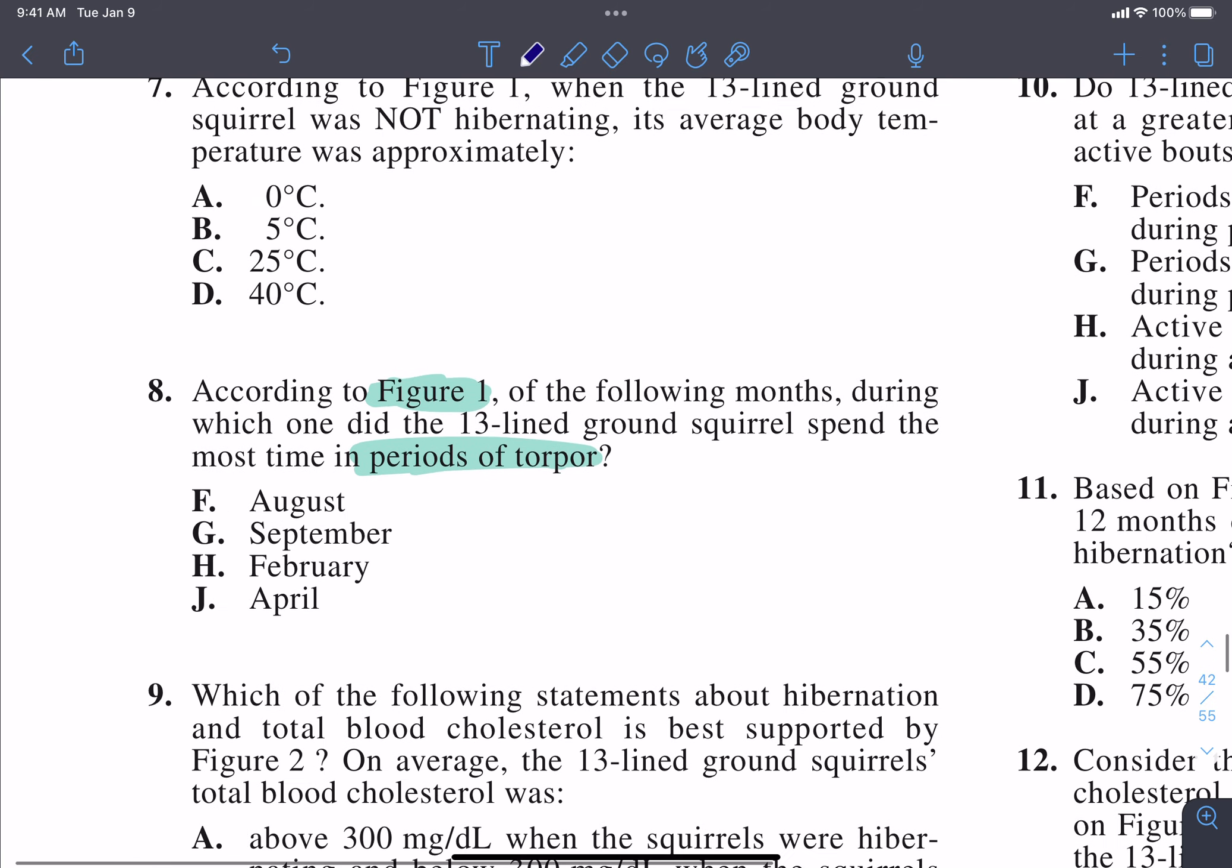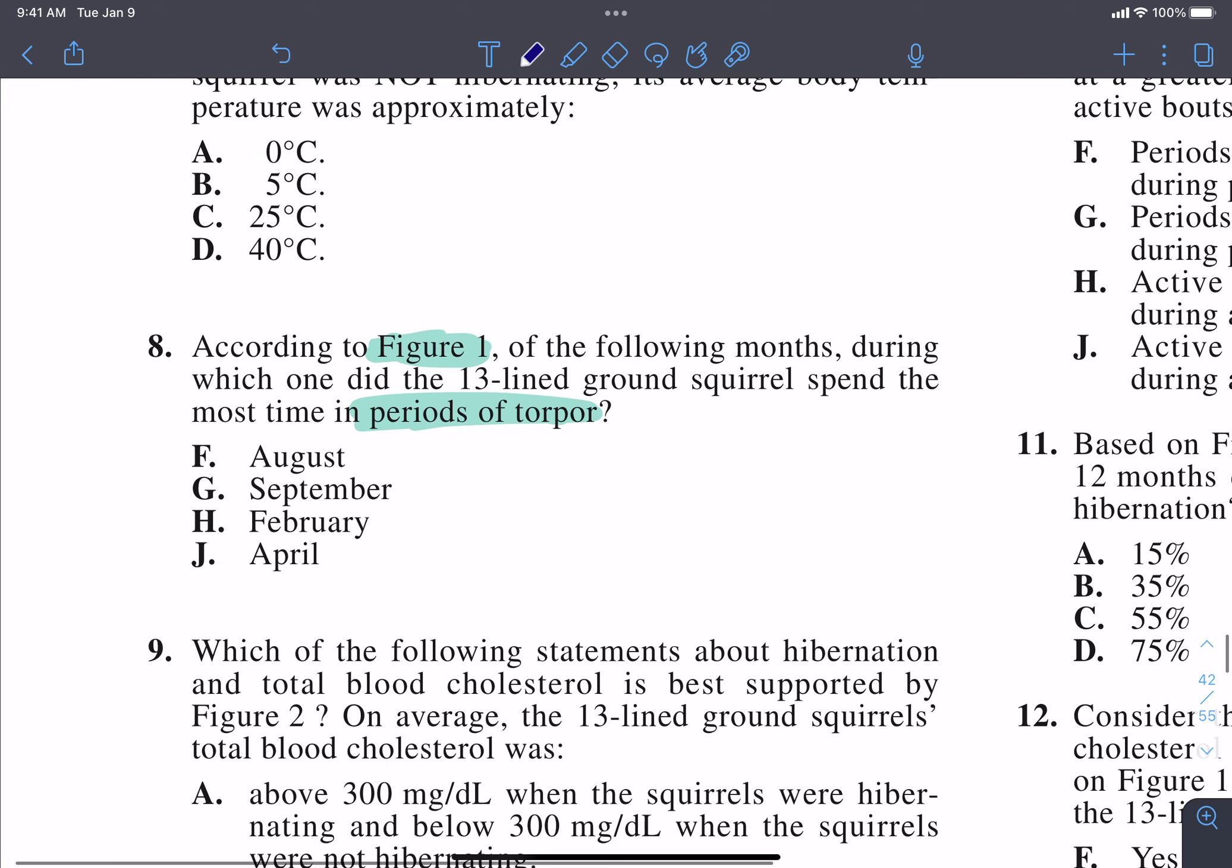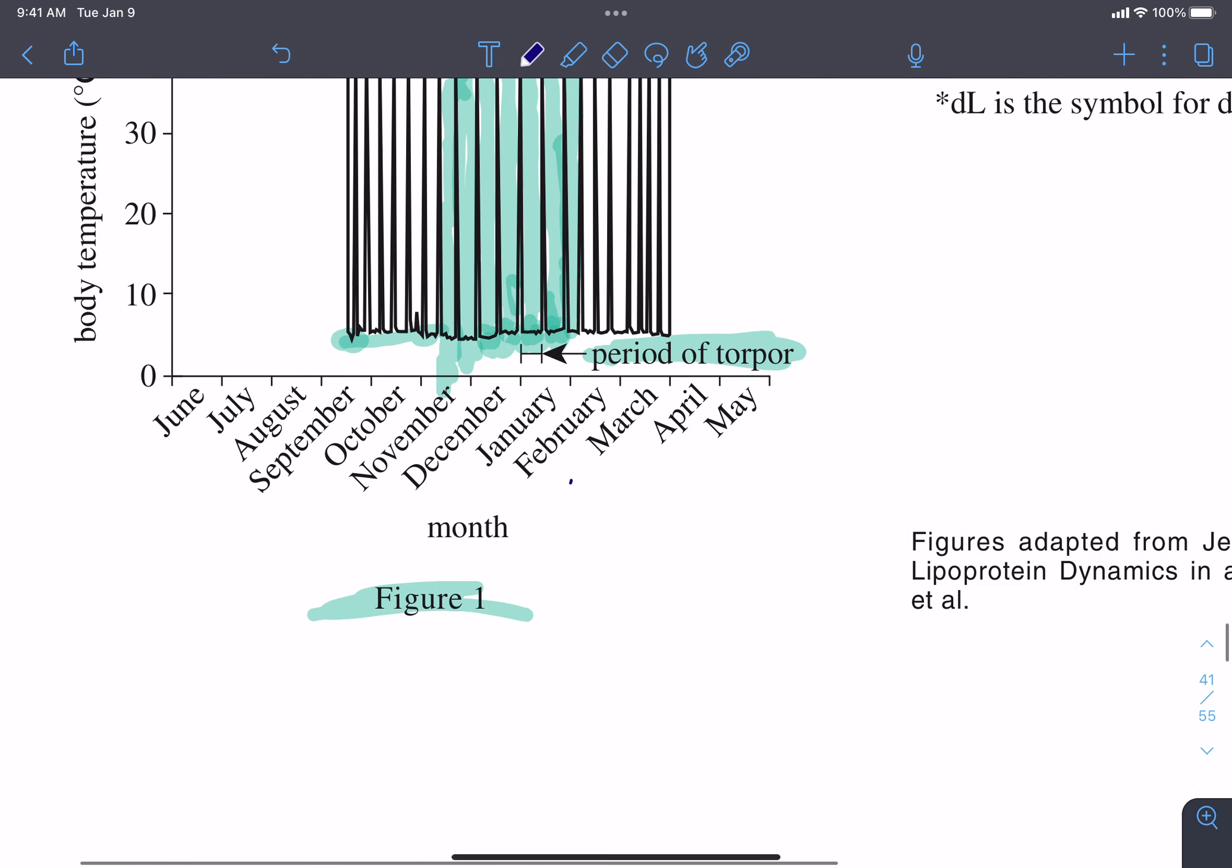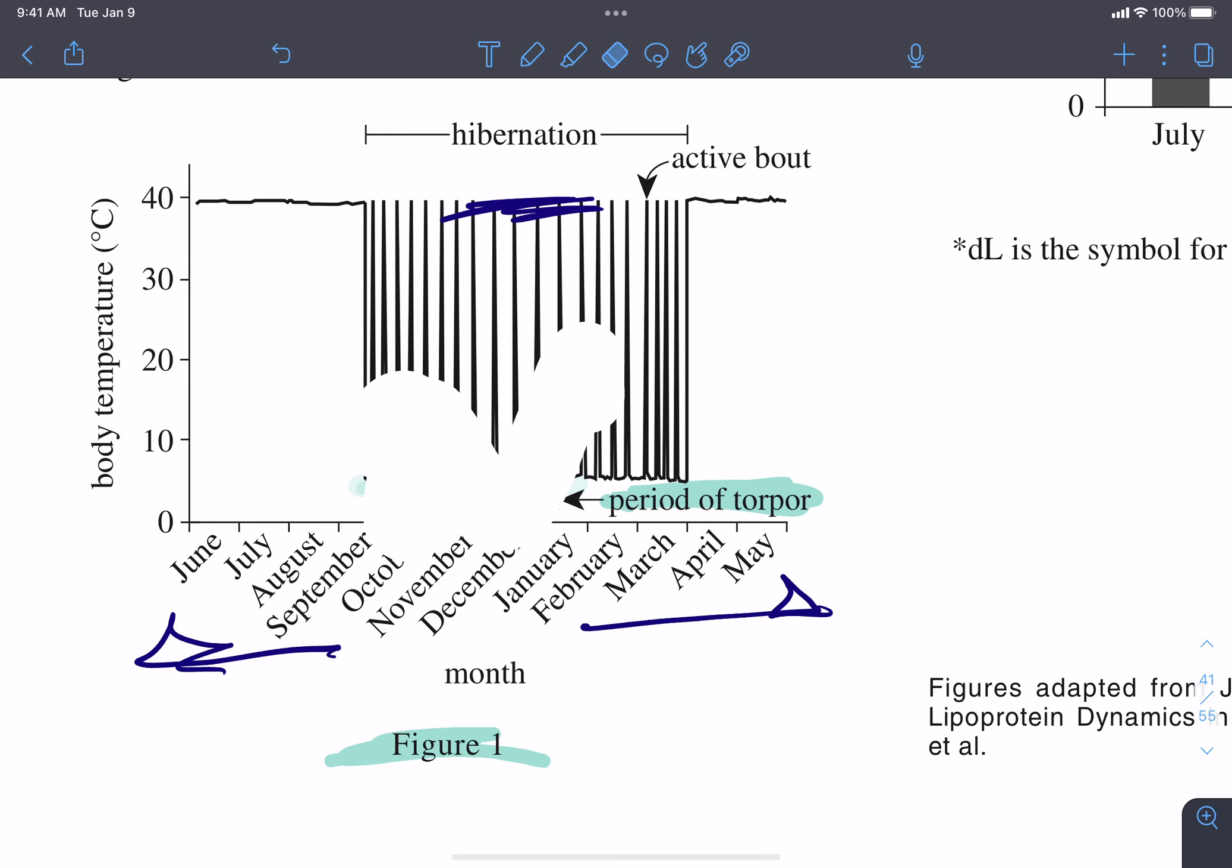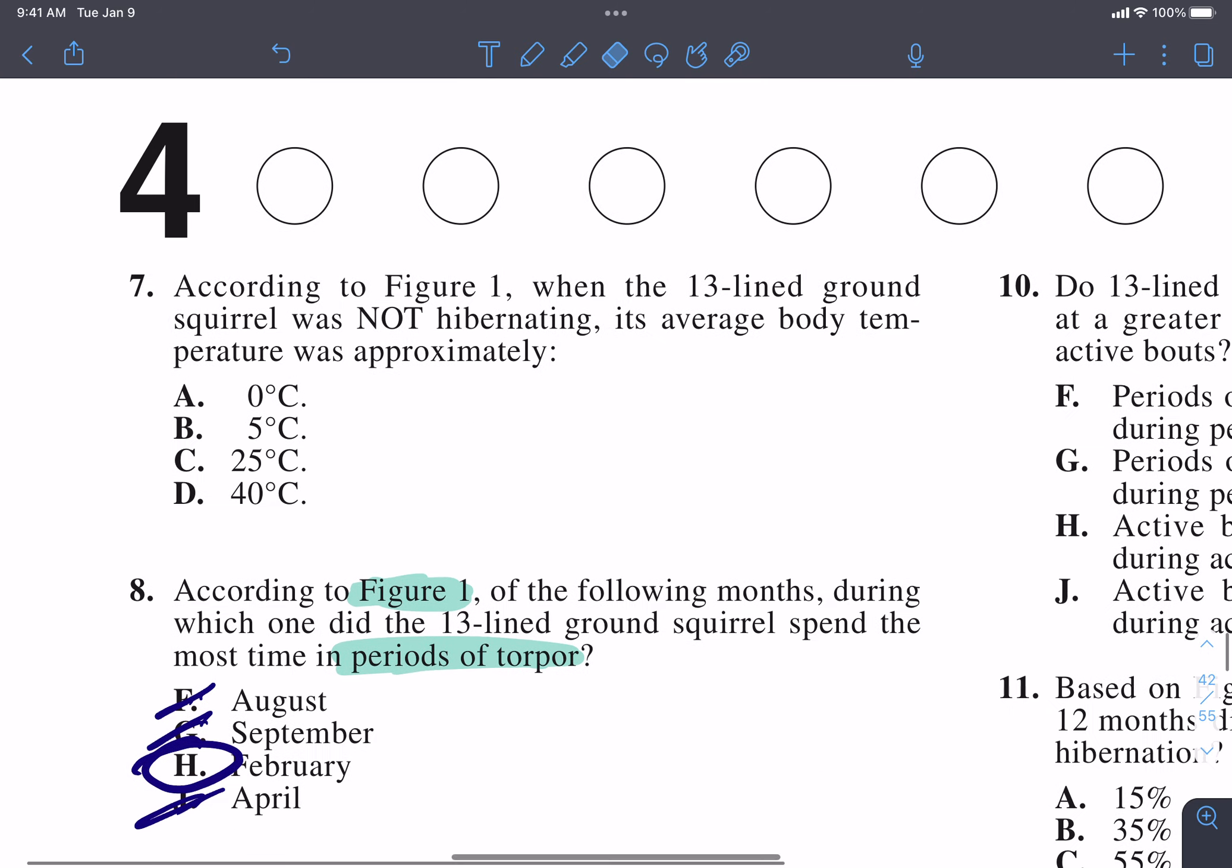So let's go to our answer choices. We have to pick one that's between November to February. The only answer that's going to be there is answer choice H. Again, August, September and April, all of these areas outside of these very wide periods of torpor are going to be the least. So that's why our answer for this question is going to be answer choice H, February.